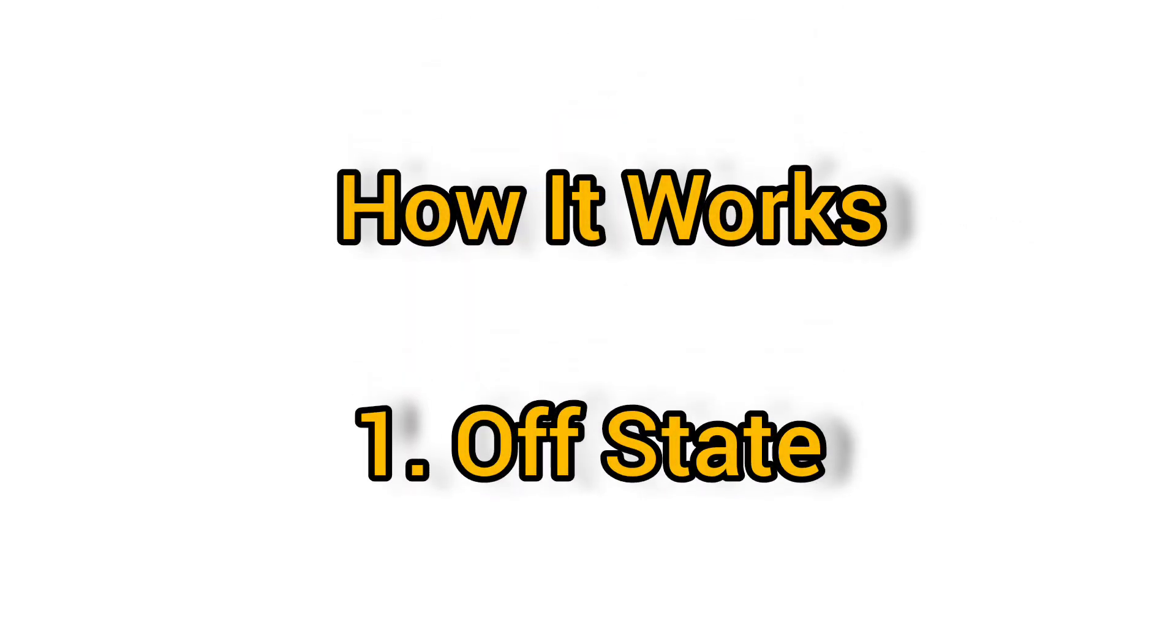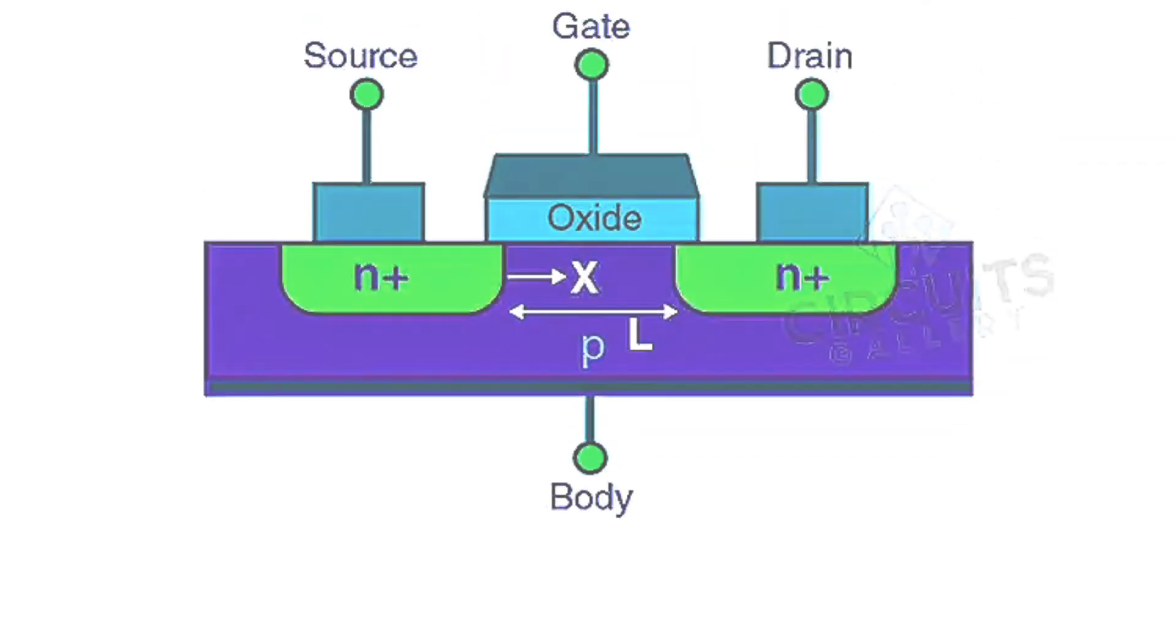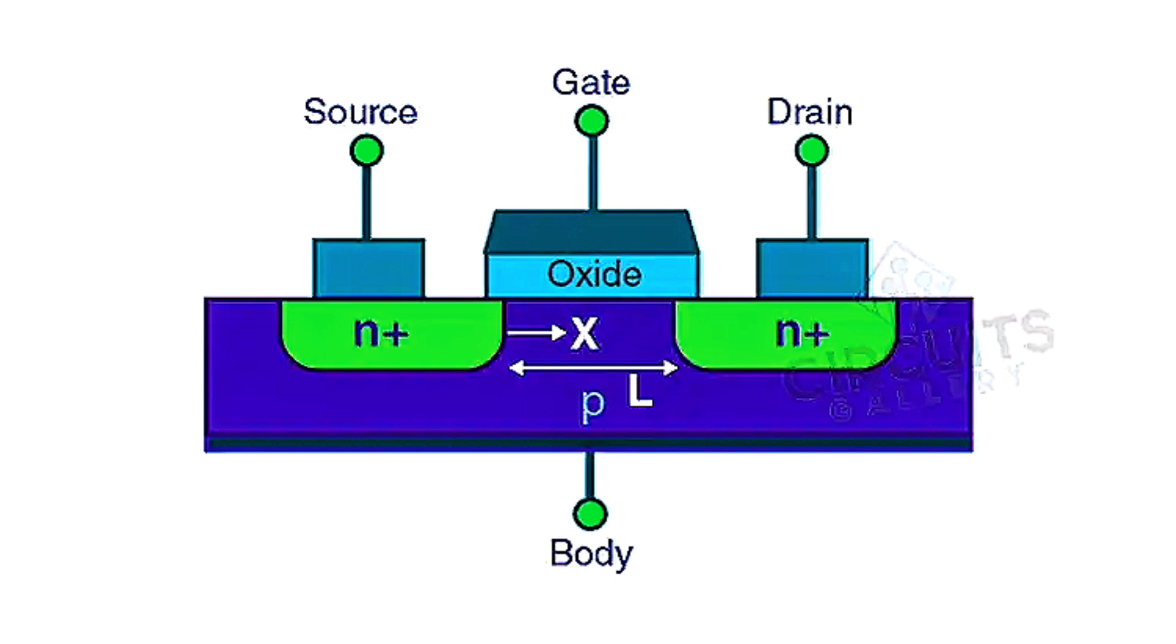How it works: In the off-state, when no voltage is applied to the gate, the MOSFET is off and there's no current flow between the drain and source. This is because the N-channel is not formed yet.